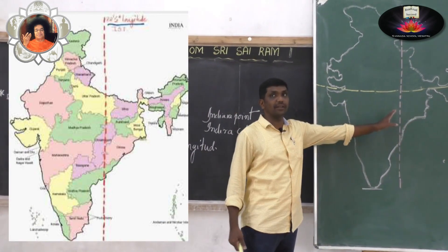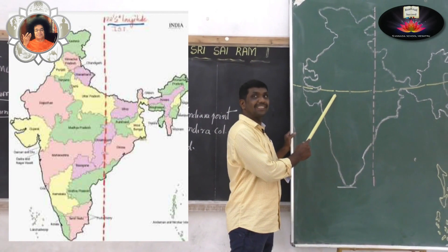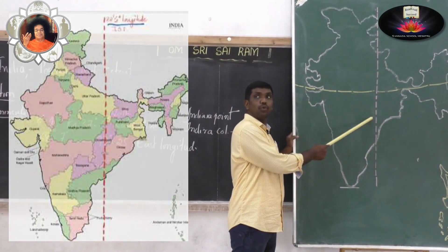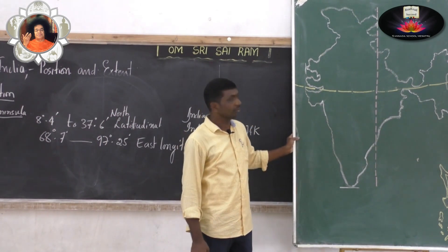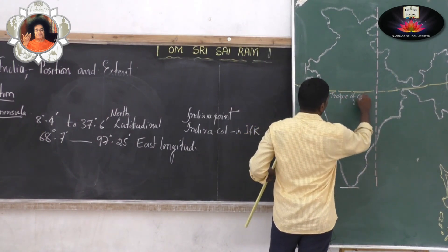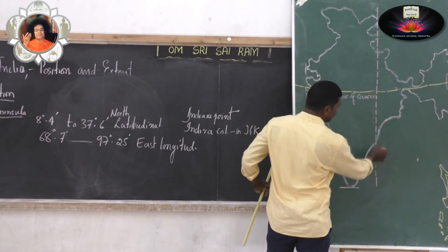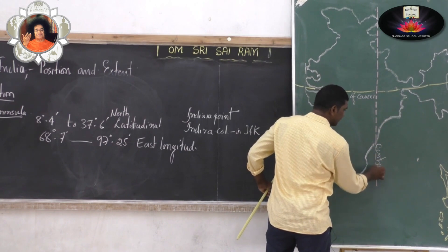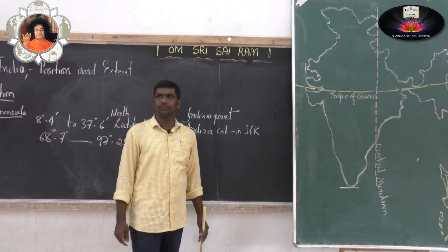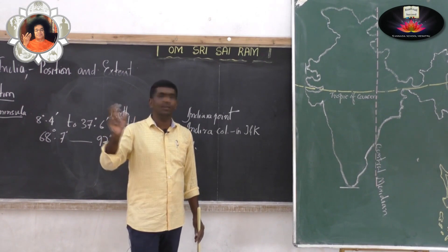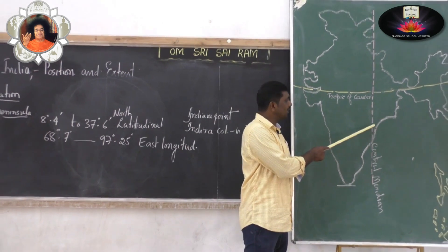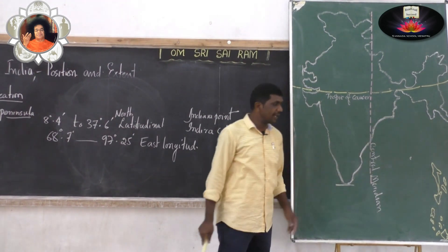During the examination, you may get confused, so avoid this: the Tropic of Cancer is 23 and a half degrees latitude, and the central meridian is 82 and a half degrees east longitude. The Indian Standard Time is based on this 82 and a half degree east longitude.